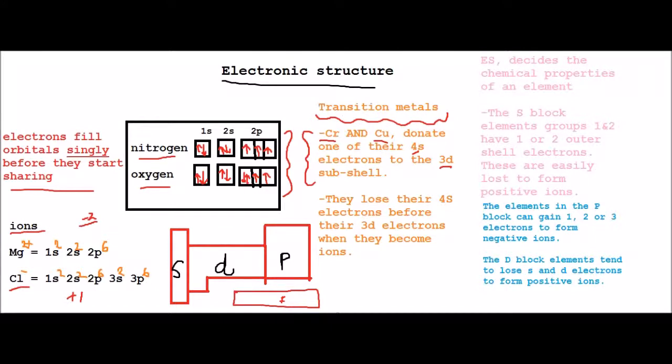Next little fact is that the transition metals lose their 4s electrons before their 3d electrons when they become ions. This is strange because 3d has a higher energy level, but it happens anyway because science.